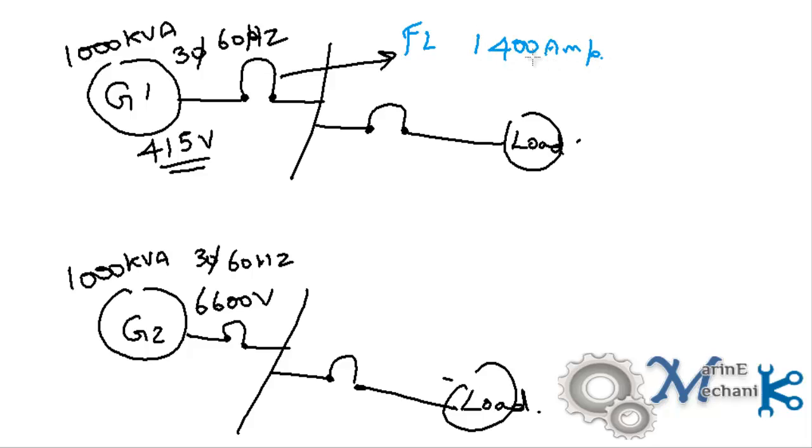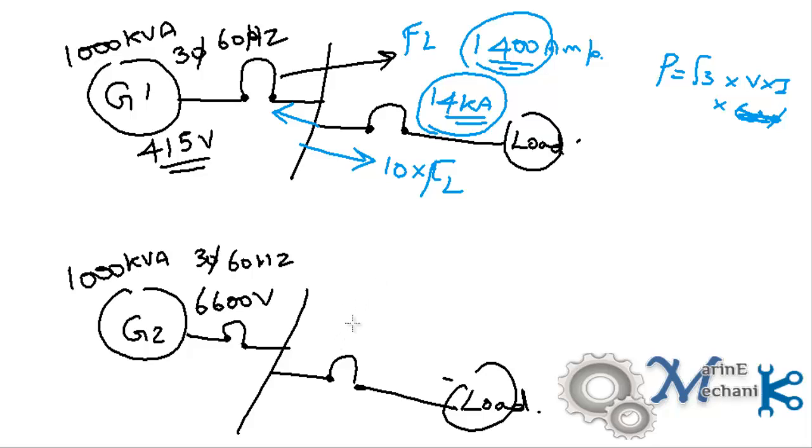Using the formula P equals root 3 V into I, I get the full load amperes to be 1400 amperes. To protect my generator and the supply circuit and feeder circuit, I have to design my protection devices roughly as a thumb rule, ten times the full load current. So ten times 1400 amps is 14 kilo amperes. I have to match my circuit breaker and other protection devices for 14 kilo amperes.